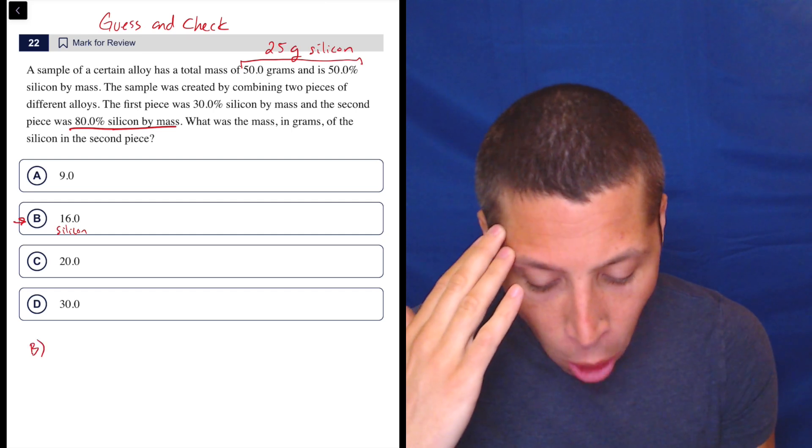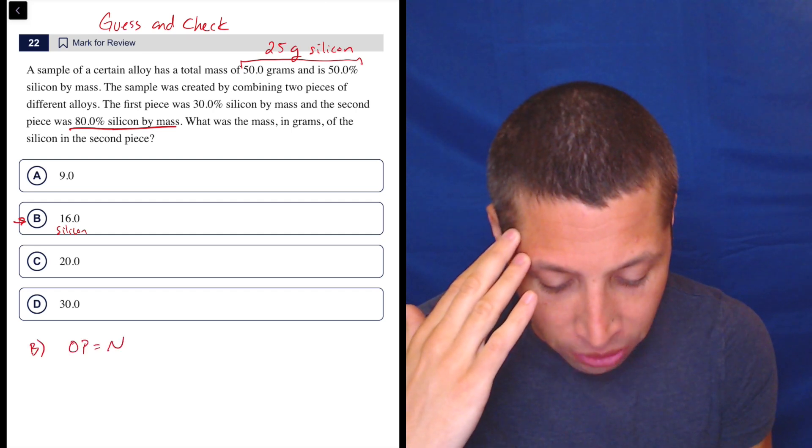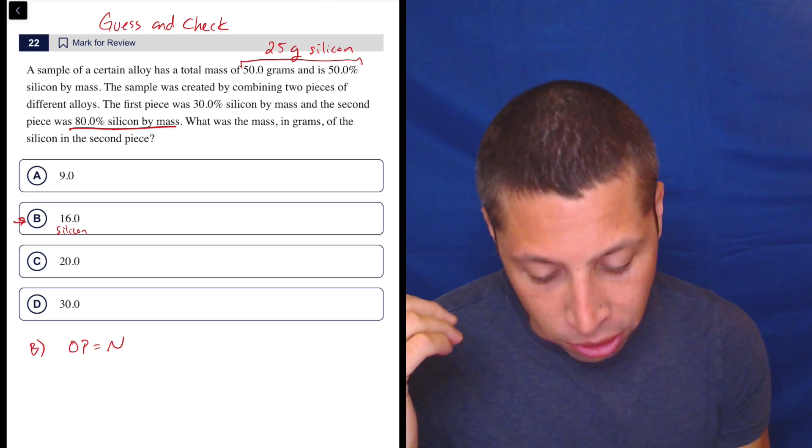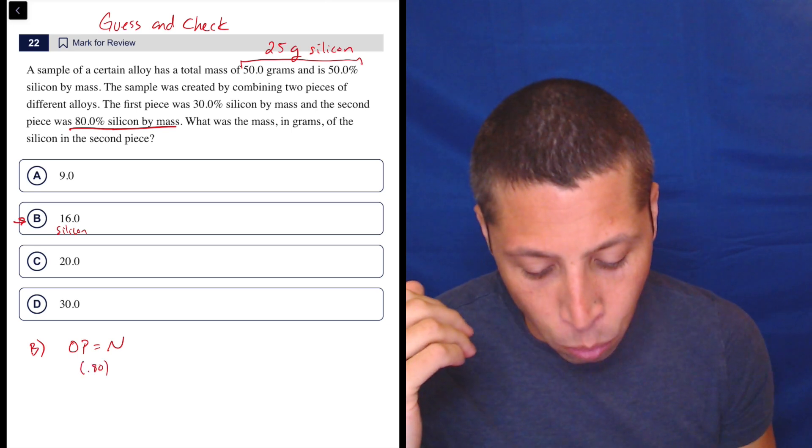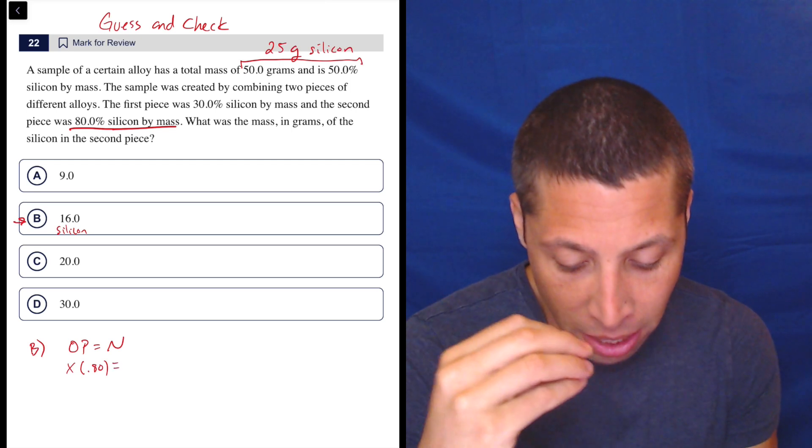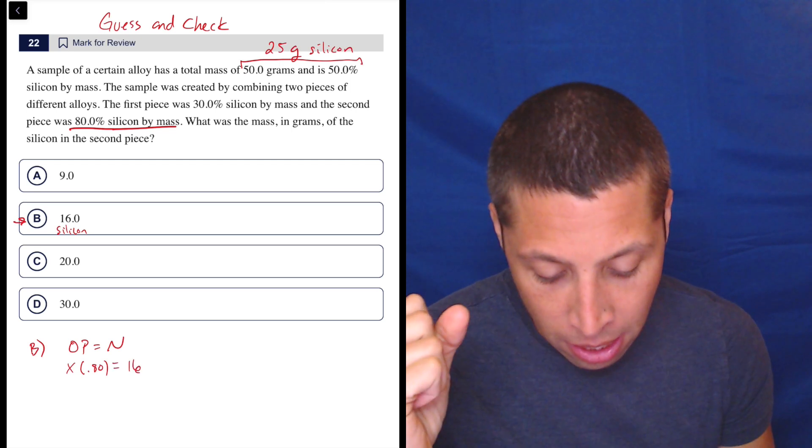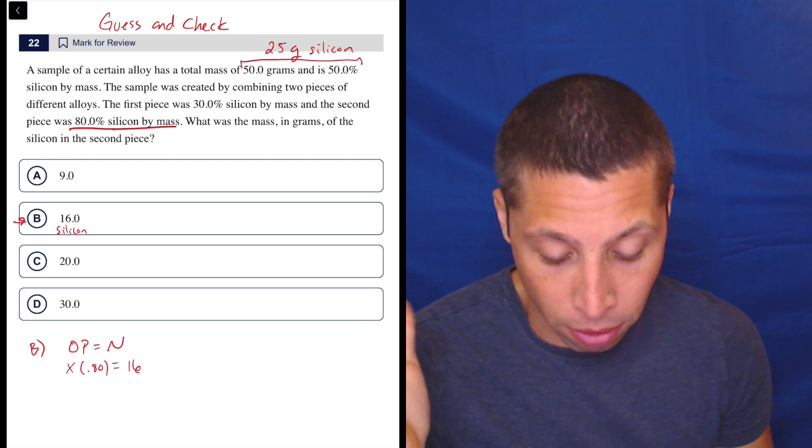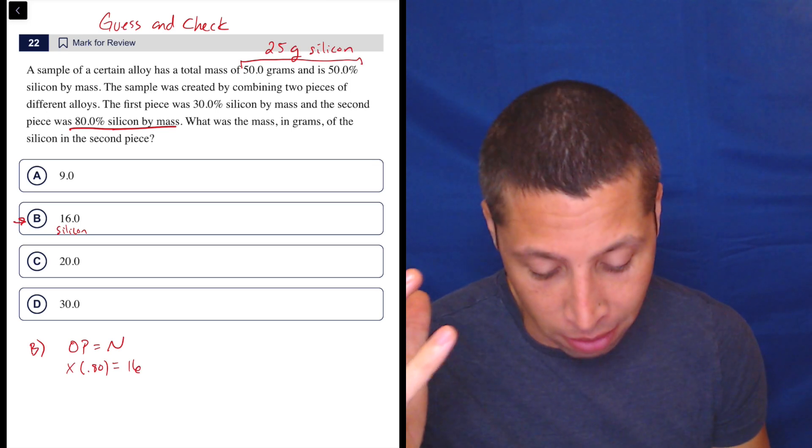Let's do it down here. So the open formula OP equals N helps us do with percentages. So 80% would be 0.8. We don't know the original mass of this thing, but we know that 80% of it is supposed to be 16 grams of silicon.